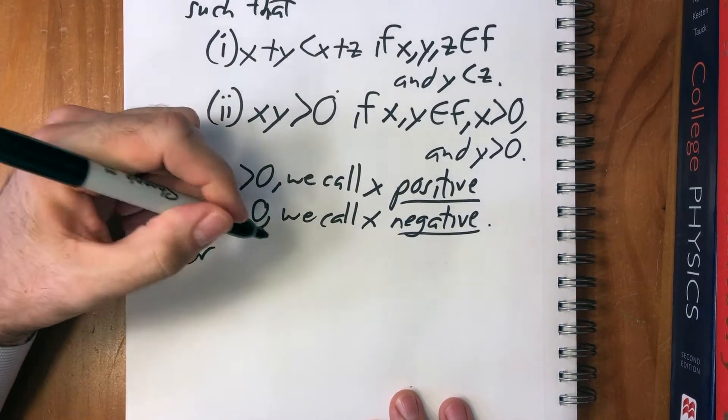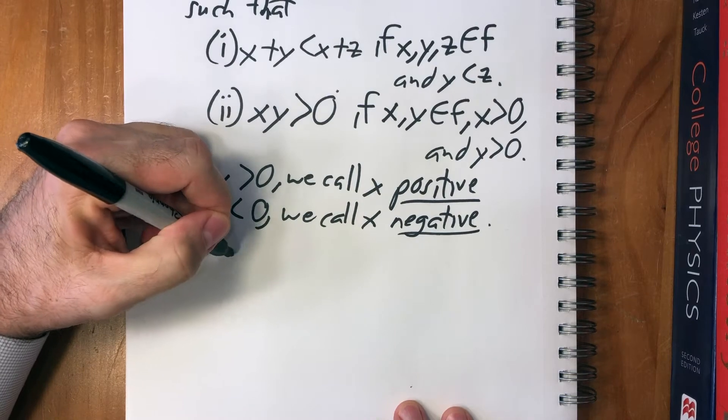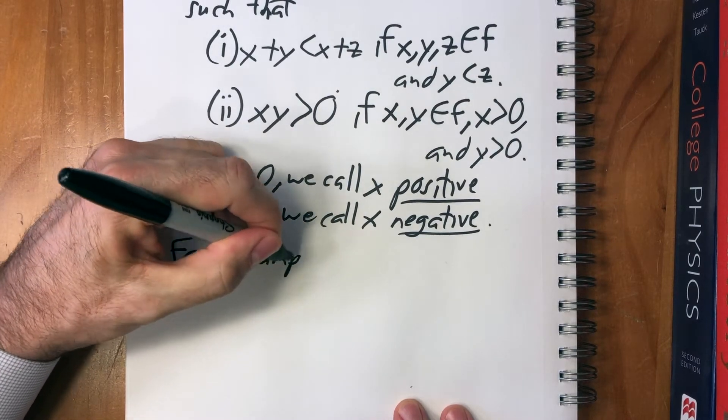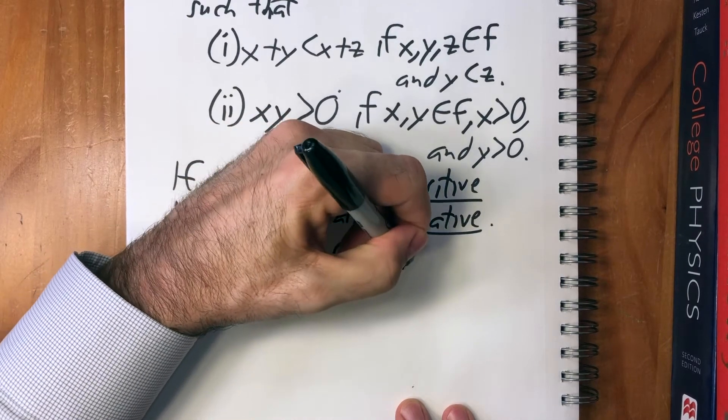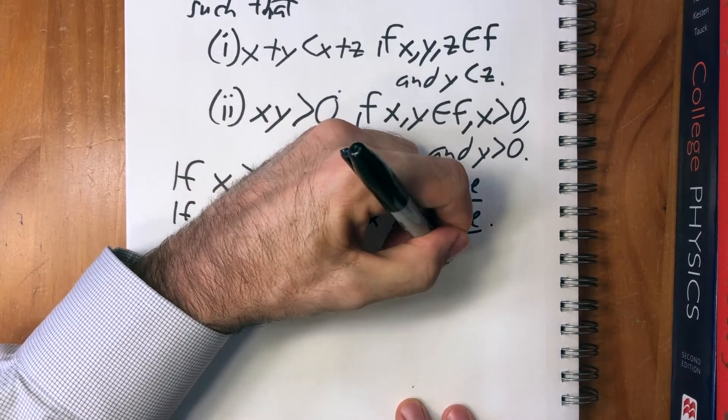And again, this is obvious, but just to state it, for example, Q is an ordered field.